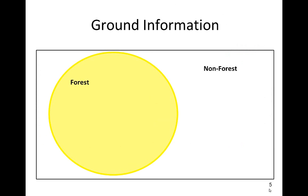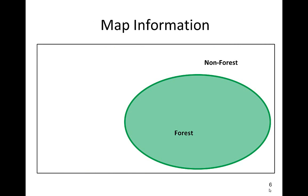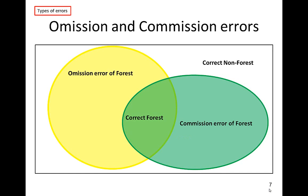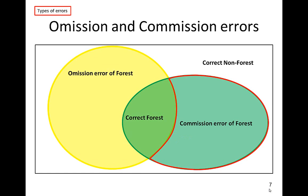We explain two types of possible errors: omission error and commission error. The black box represents our study extent. The yellow circle is forest according to ground information, and the green oval is forest according to the map. There are parts of the map that are not classified correctly. The yellow part outlined in red represents the omission error of forest, and the green part outlined in red represents the commission error of forest. The middle section is the agreement of forest between the ground information and the map.